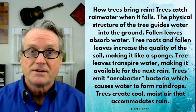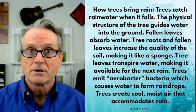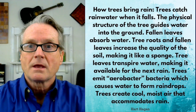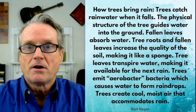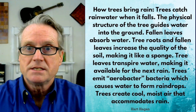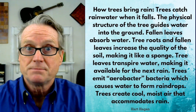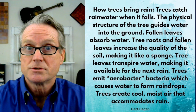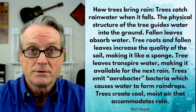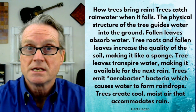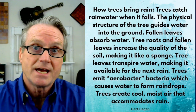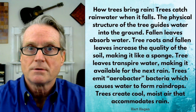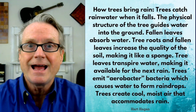Or it can sink into the ground and provide habitat. Everything needs water — fungi, plants, animals, microbes — they all need water. So tree roots and fallen leaves increase the quality of the soil, making it like a sponge. The leaf litter of trees is good for soil because fungi decompose it, and it also keeps the soil from drying out.